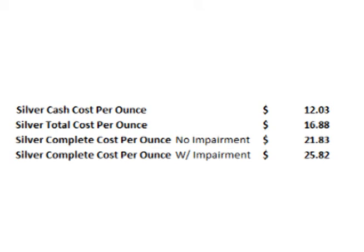For 2012, Pan Am's cash cost was $12.03 per ounce, their total or all-in cost was $16.88 per ounce, and their complete cost was $21.83 per ounce without the Navidad write-down, or $25.82 per ounce with the Navidad write-down.